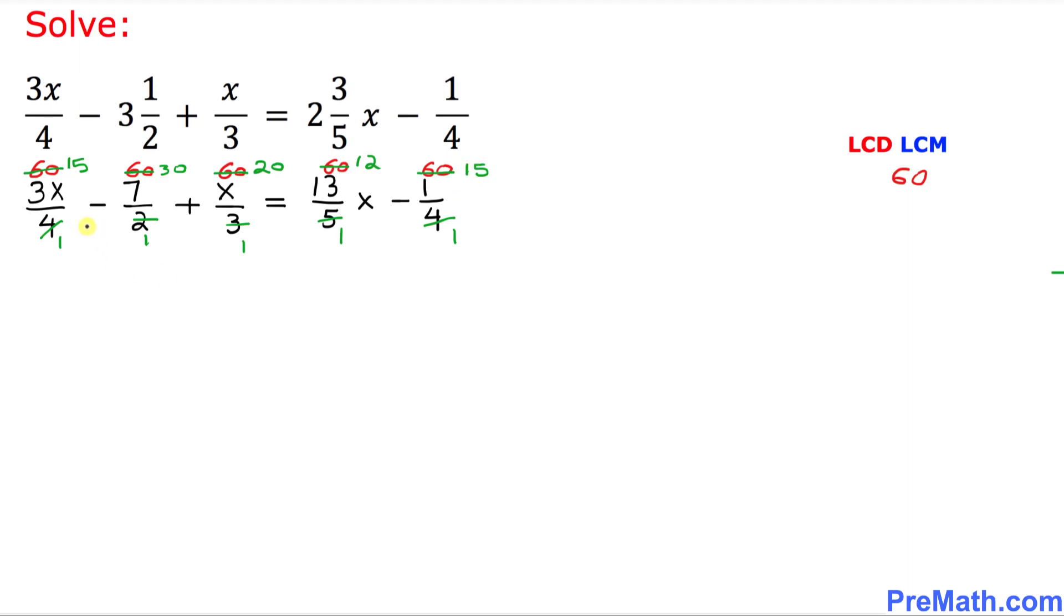So thus our equation is going to become 15 times 3 is 45x, and here 7 times 30 is negative 210, and here plus 20x equals 13 times 12 is 156x minus 15.